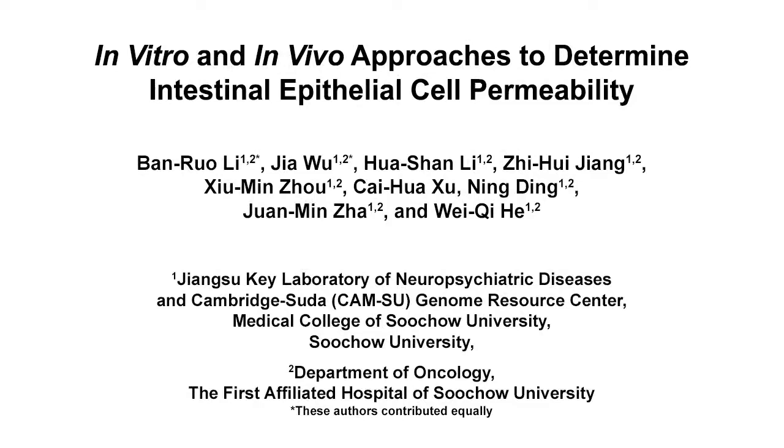The overall goal of this experiment is to study the diseases caused by epithelial barrier dysfunction by measuring the intestinal epithelial cell permeability in vitro and in vivo. This method can help answer key questions in the intestinal barrier function field, such as those related to inflammatory bowel disease. The main advantage of this technique is that intestinal epithelial cell permeability can be assessed both in vitro and in vivo.